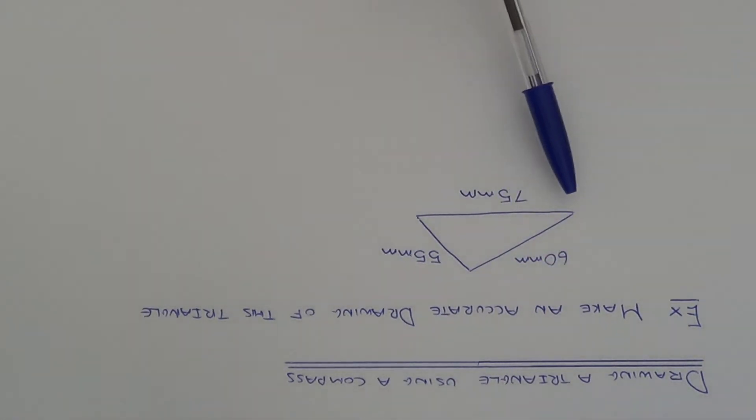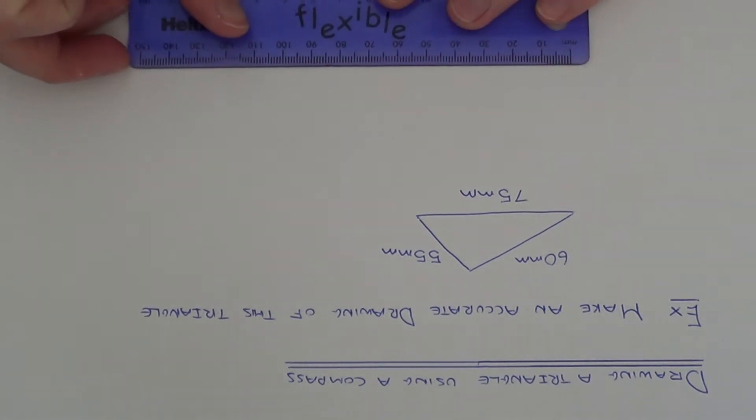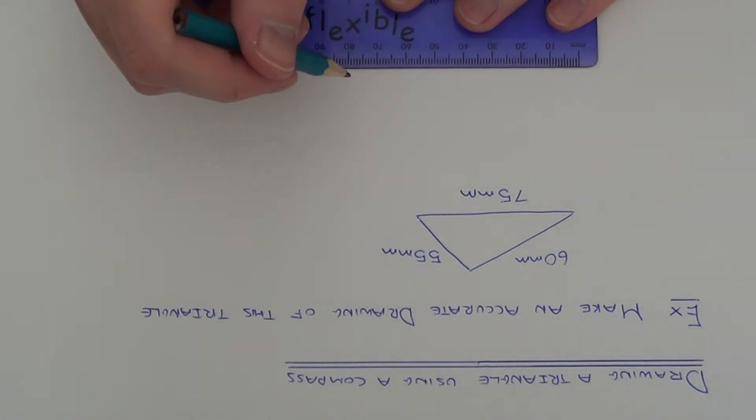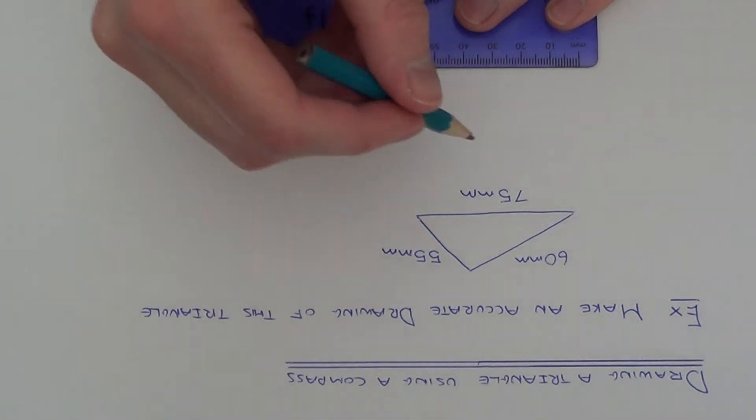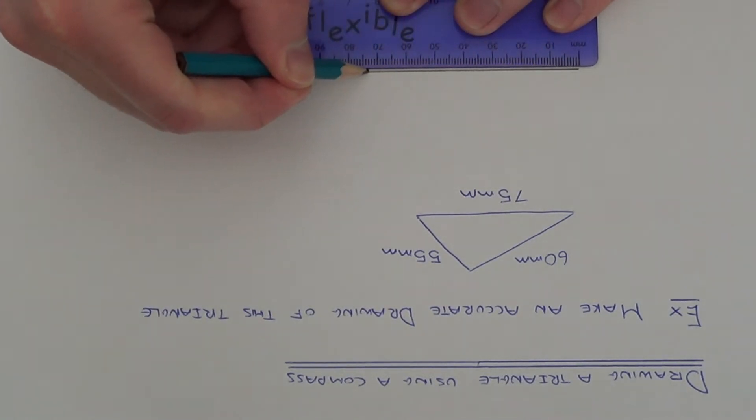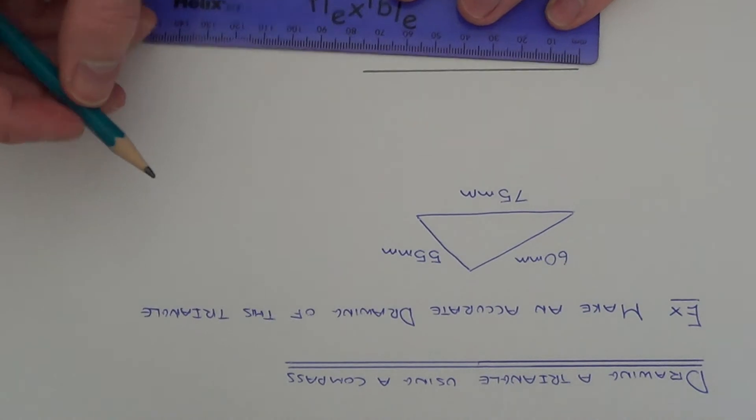First of all, draw your bottom edge. So in this example it's 75mm. If you get your ruler and draw a line of 75mm, give yourself plenty of room because the other sides have to go above this line. So there's 75mm.